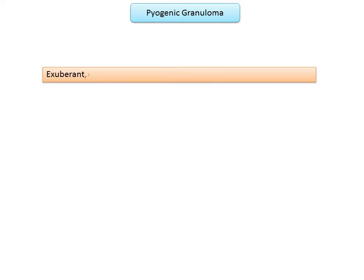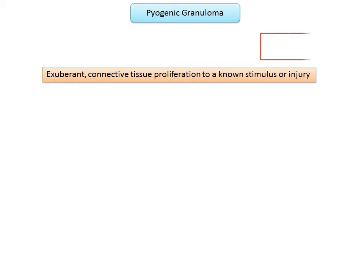Pyogenic granuloma represents an exuberant connective tissue proliferation to a known stimulus or injury. Over the years it has been termed by various names such as granuloma pediculatum benignum, vascular epulis, and Crocker and Hartzell's disease. The present name was given by Crocker in 1903, and the term granuloma pyogenicum was stated by Hartzell in 1904.